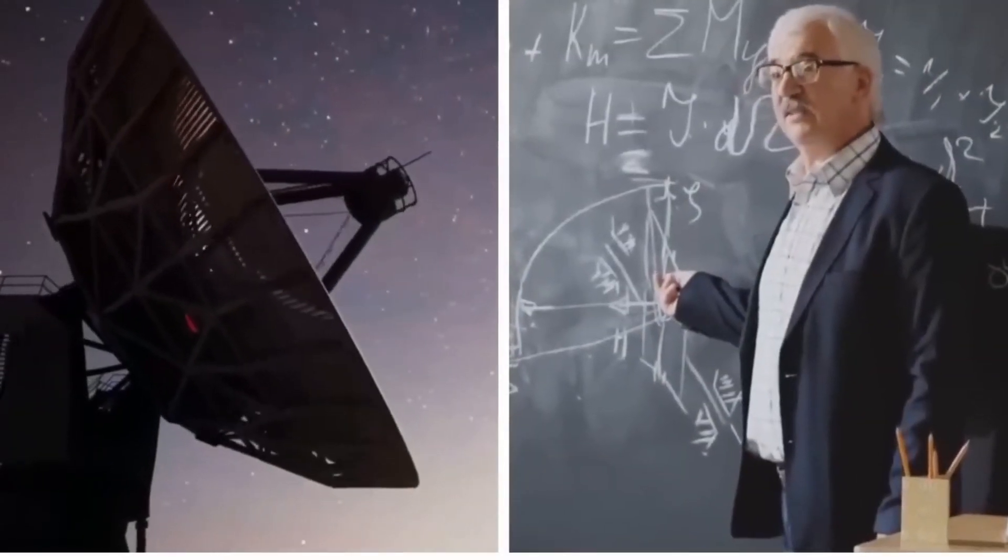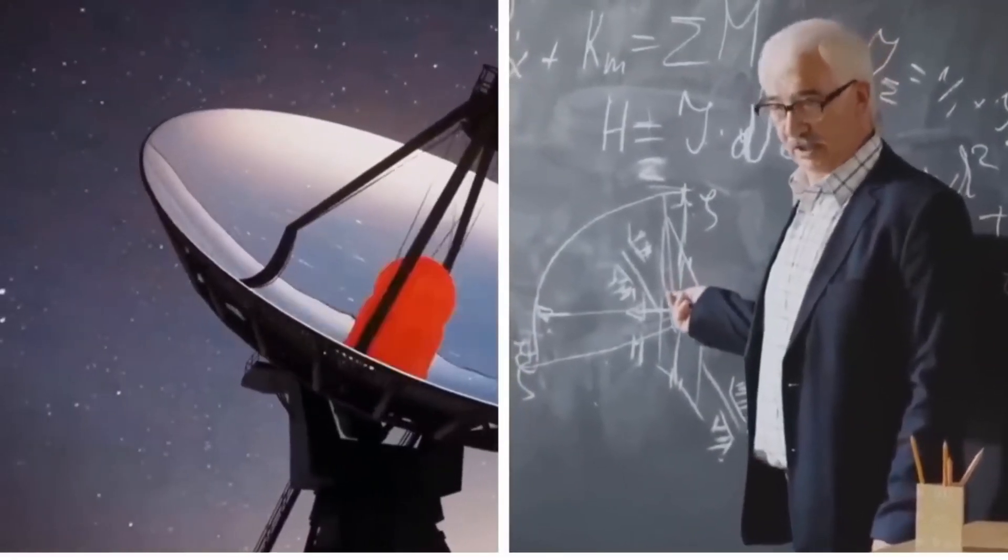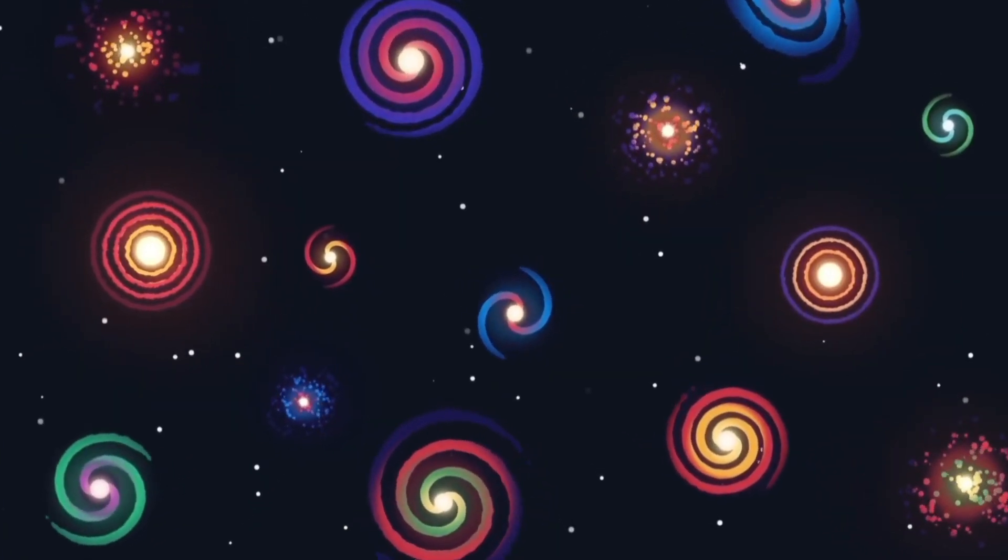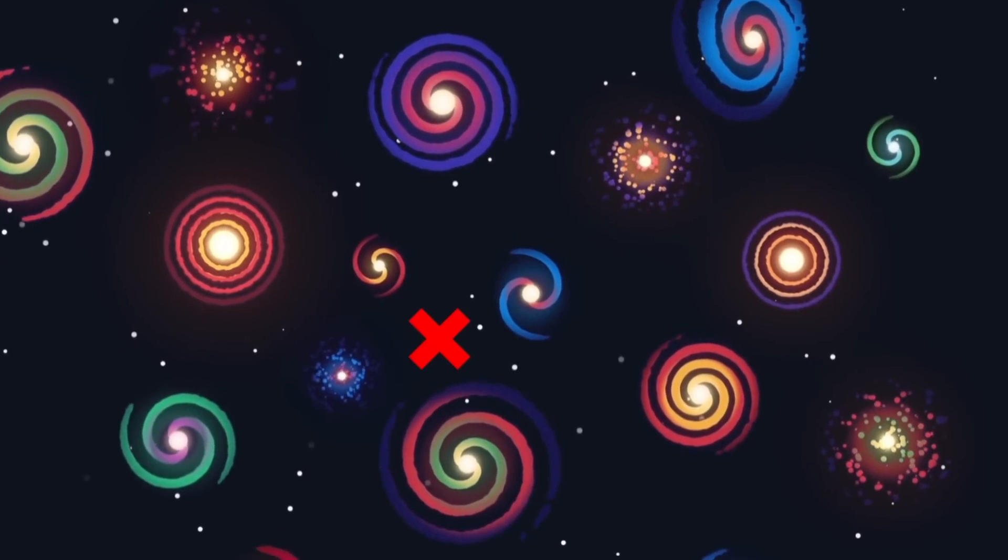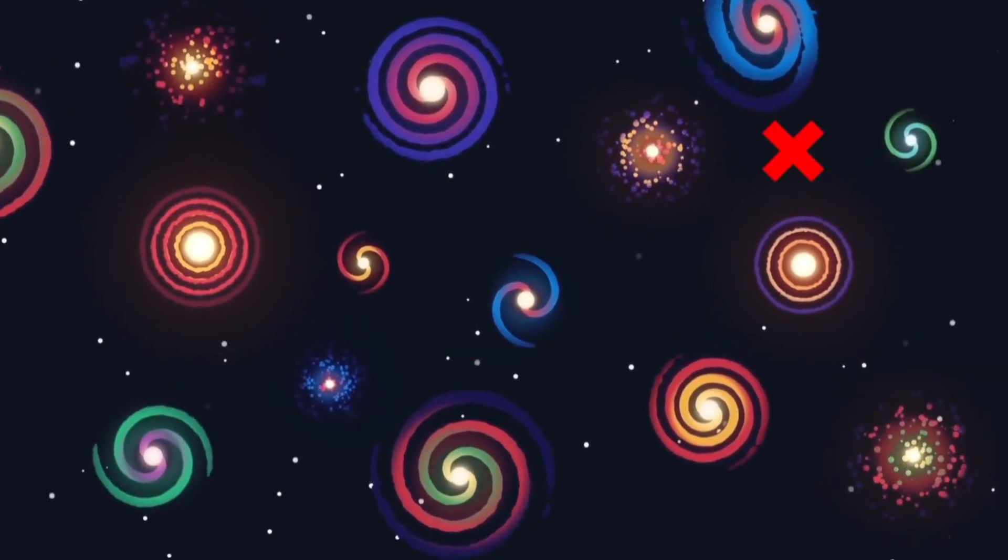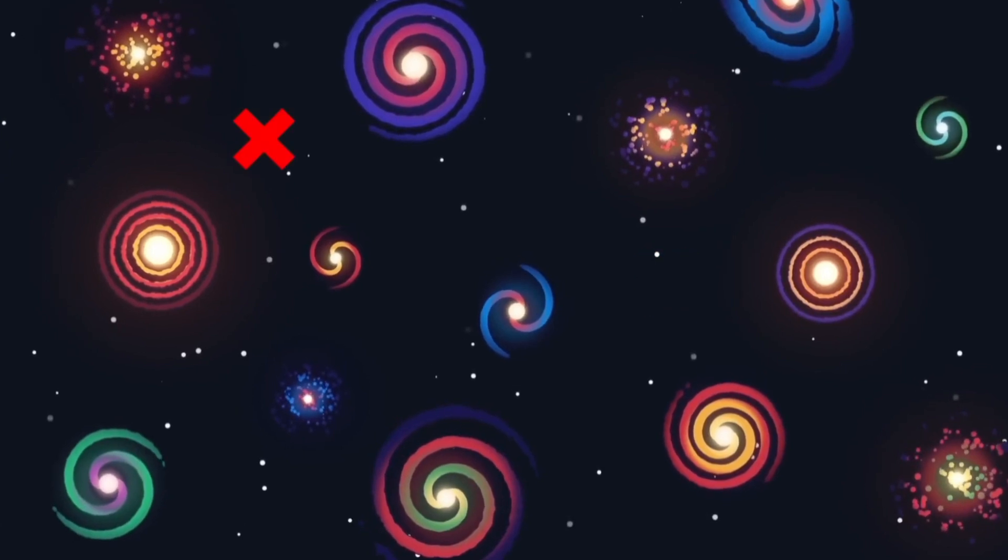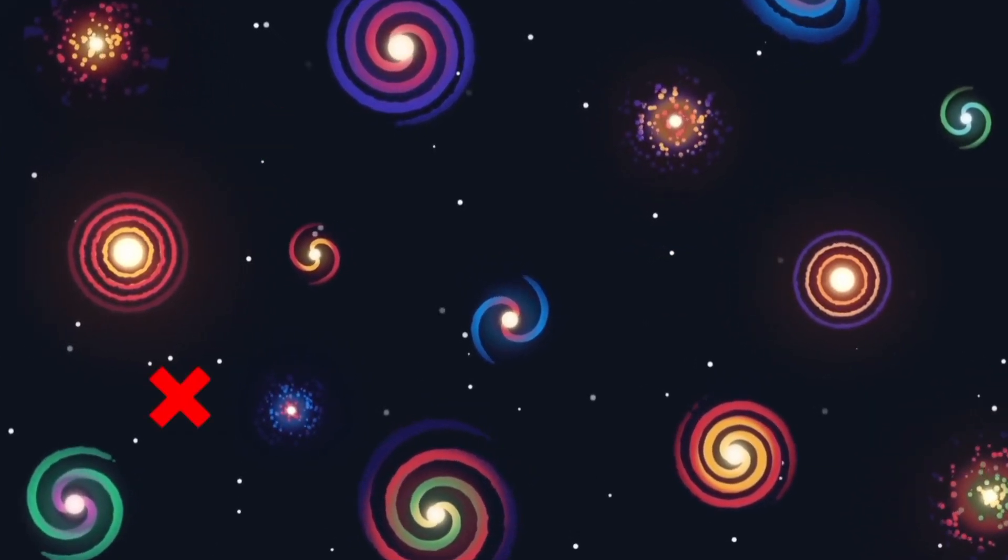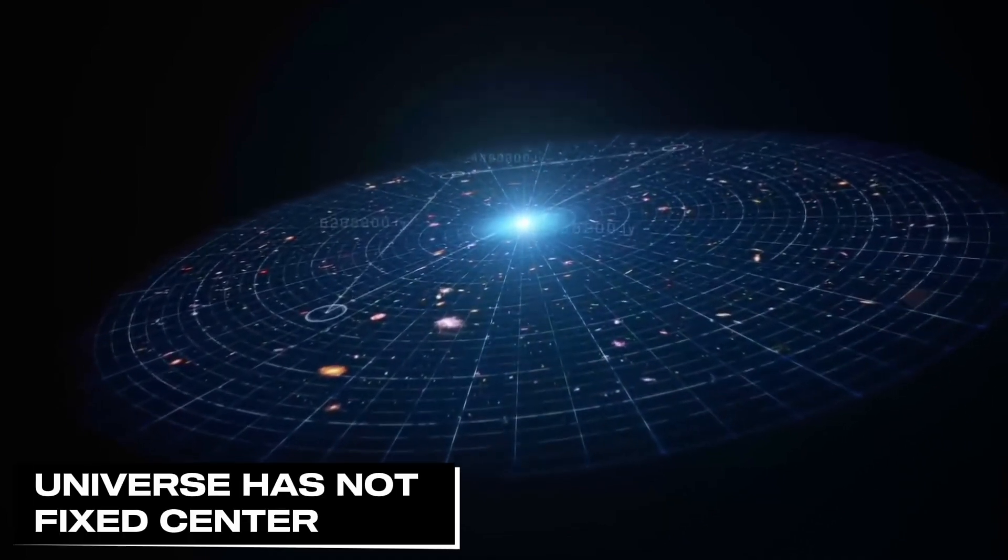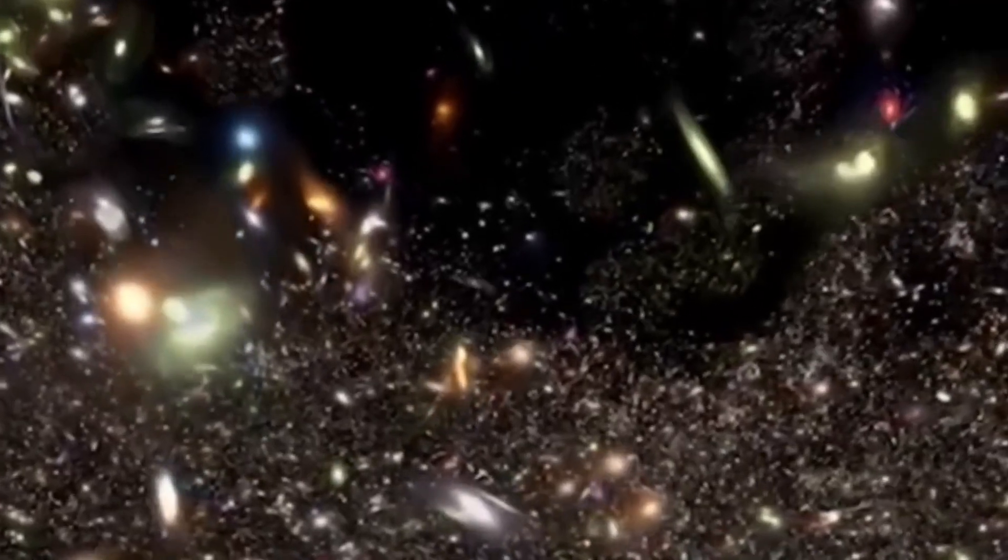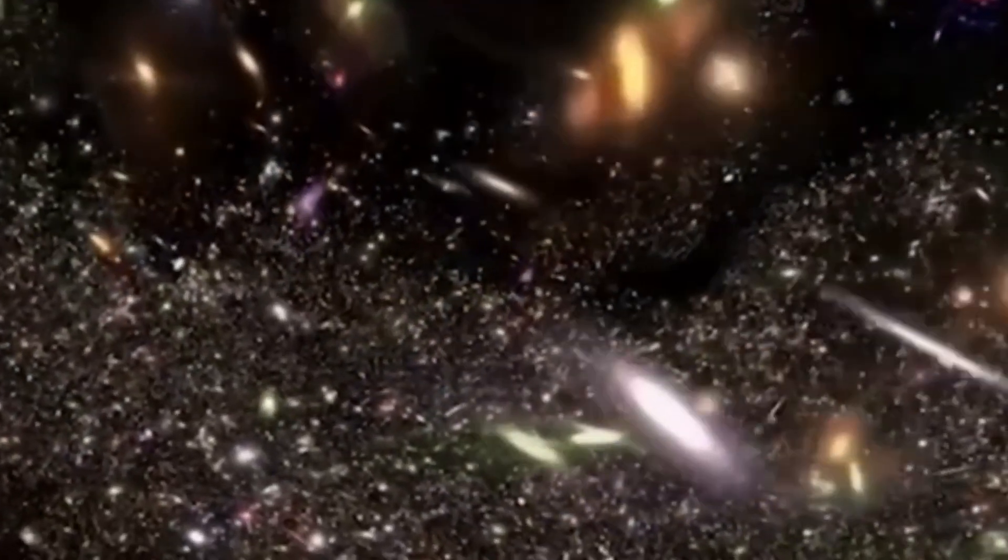After decades of detailed observations and research, scientists realized that it's not the galaxies themselves moving through space. Rather, space itself is expanding. While this expansion is not as simple as it seems, it has no central point, which means that wherever you stand in the universe, you will see that everything is moving away from you, as if each point is the center of the universe. This discovery led to the understanding that the universe has no fixed center. Everything is moving away from everything else due to this cosmic expansion.